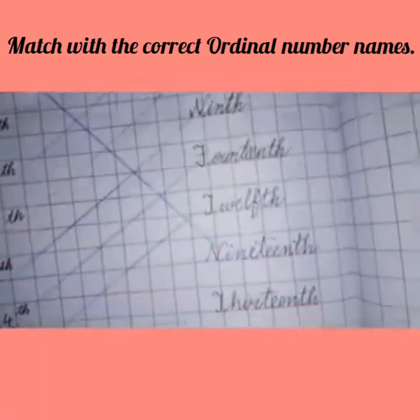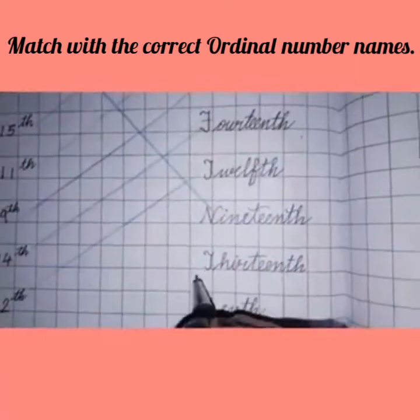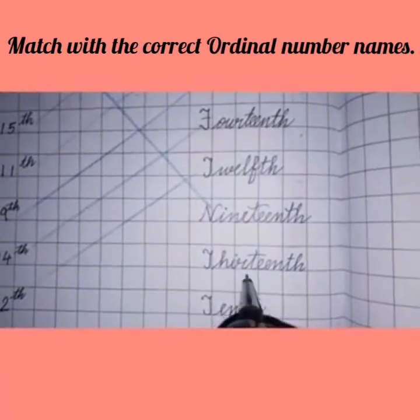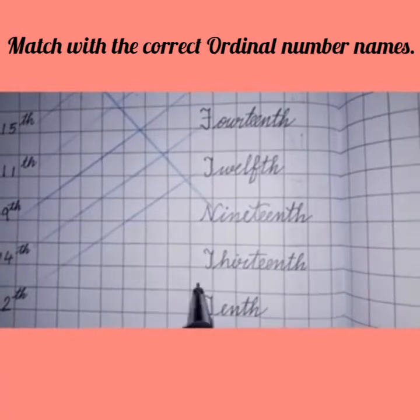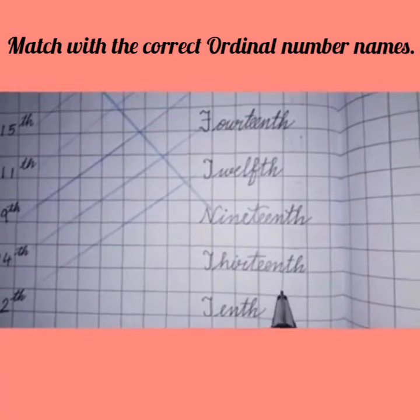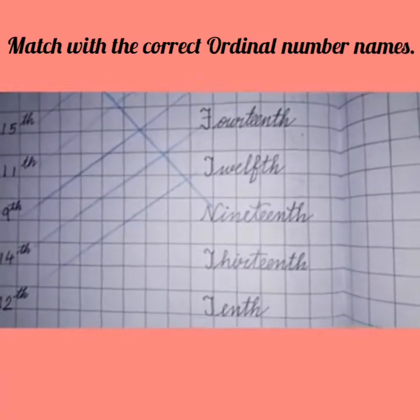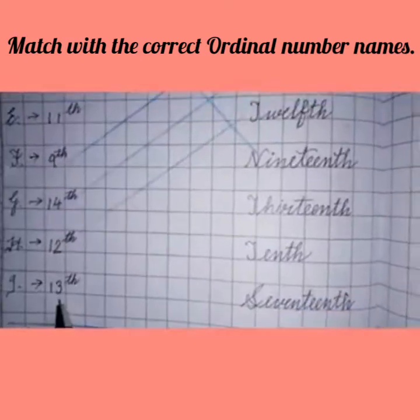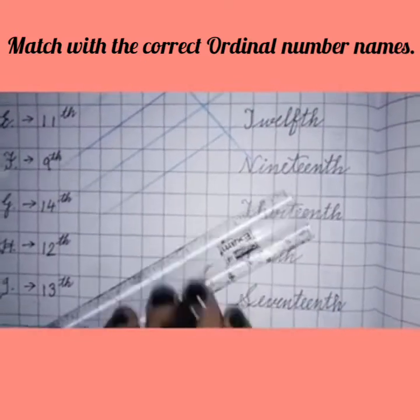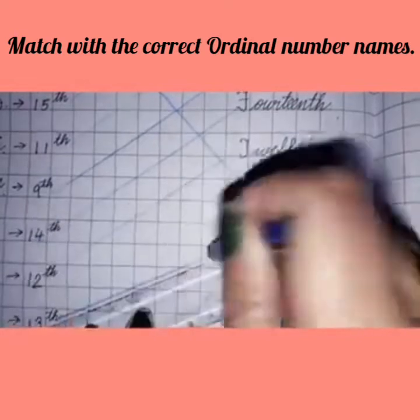Now, and next you will write here 13th. Write T-H-I-R-T-E-E-N-T-H 13th. So where is 13th in this row? You can see that. This is 13th. So you have to match this like this.